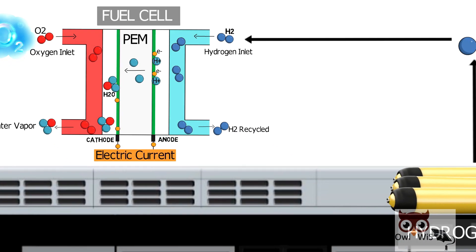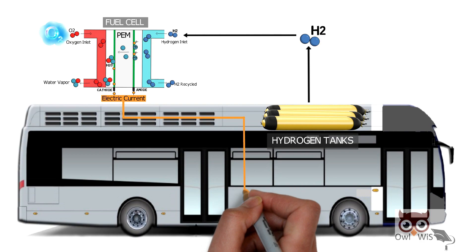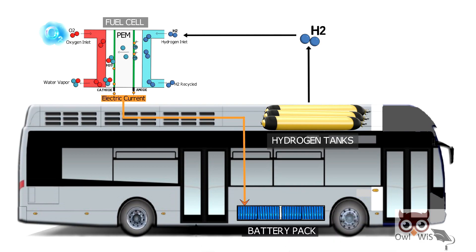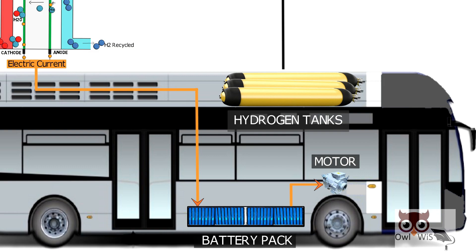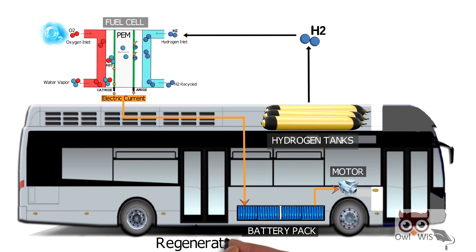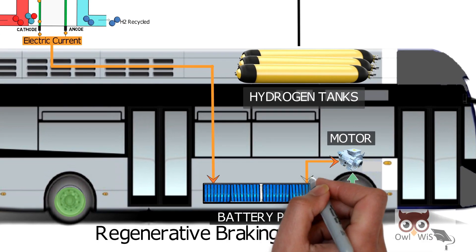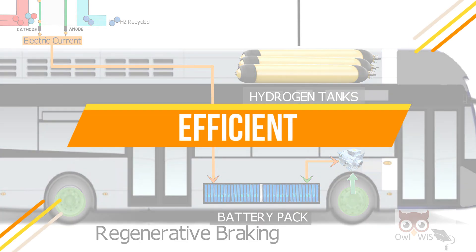The electric current then charges a battery pack. This battery powers the motors which drives the bus. Regenerative braking is also used which recycles energy loss during braking and stores back to batteries, making it efficient.